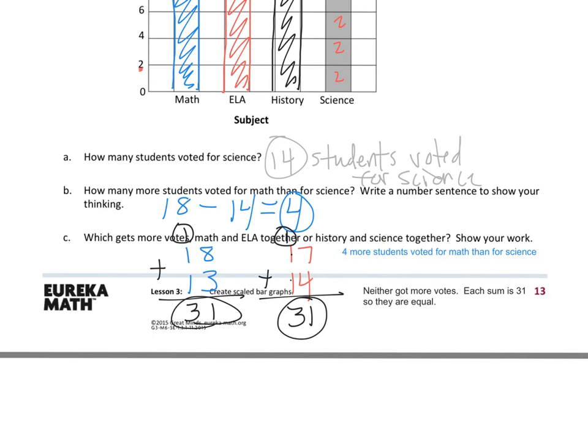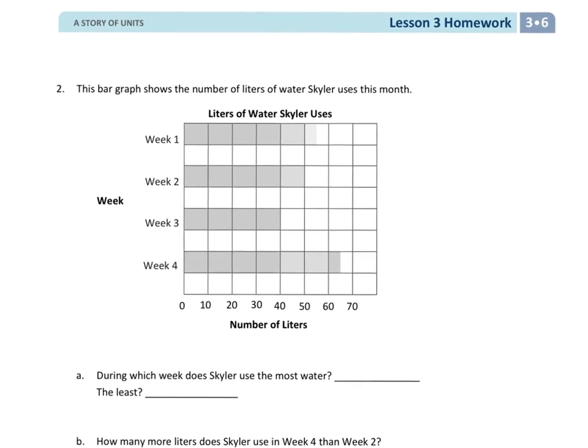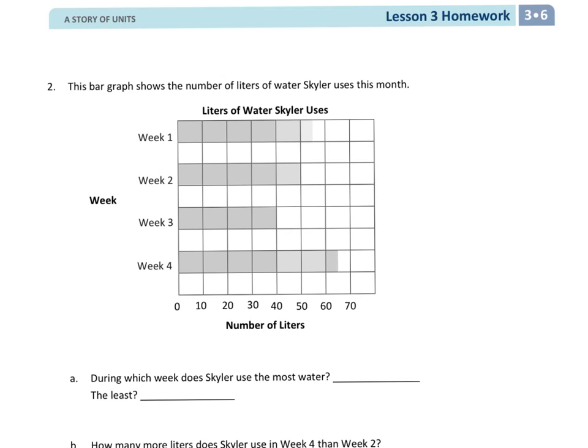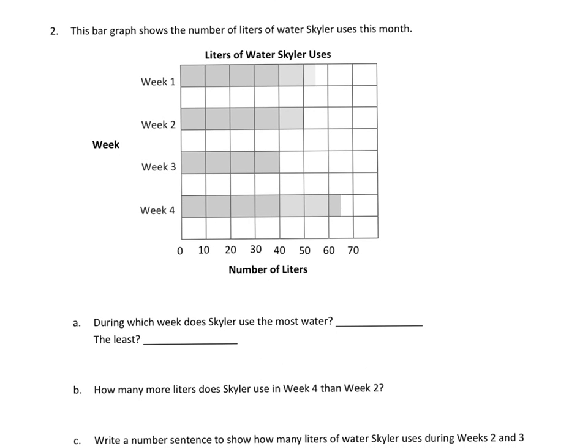Let's take a look at page 2. And on page 2, as we zoom in, question 2 says, This bar graph shows the number of liters of water Skyler uses this month. And we can see that each box is going to be worth 10 liters. So, when we go halfway in between, that's going to be a 5. So, what I'm going to do here is I'll answer these questions as we're going through, and then we'll write in our totals at the end. So, the first question says, During which week does Skyler use the most water?